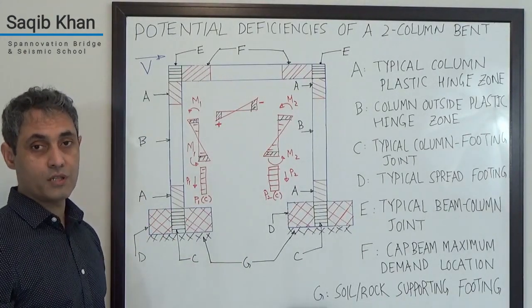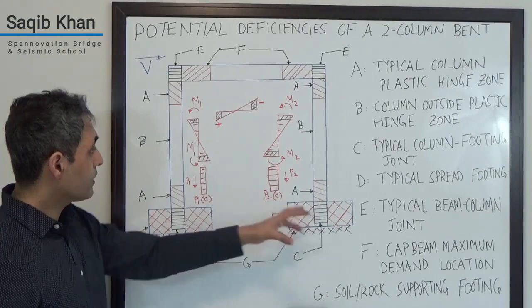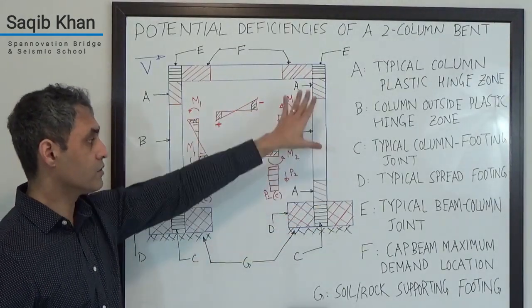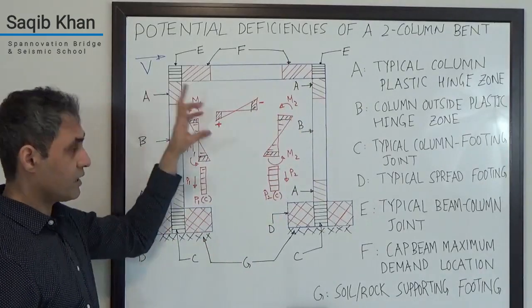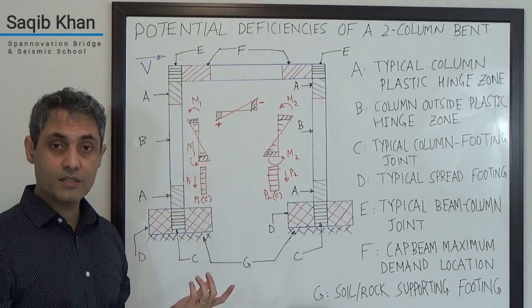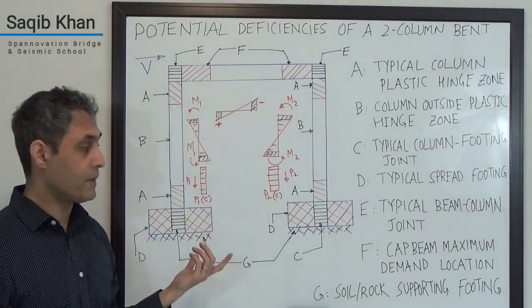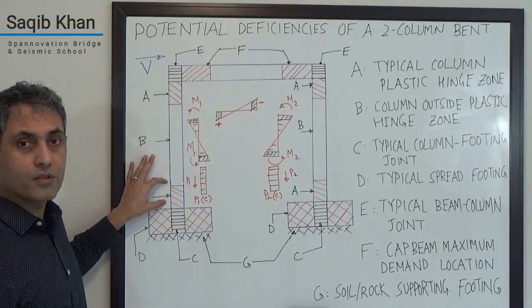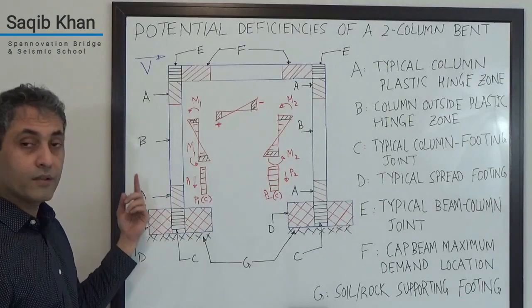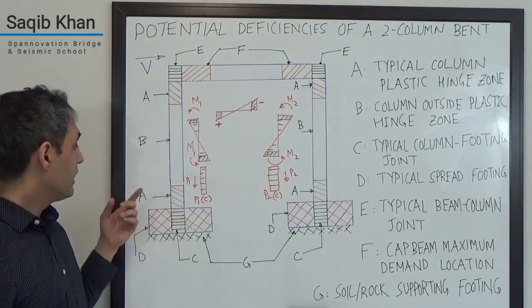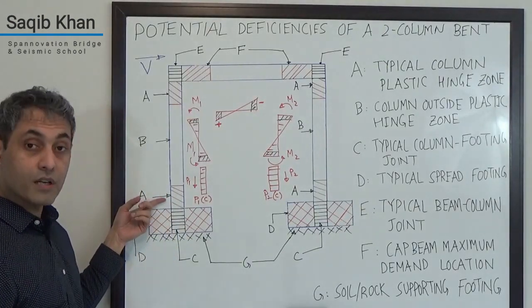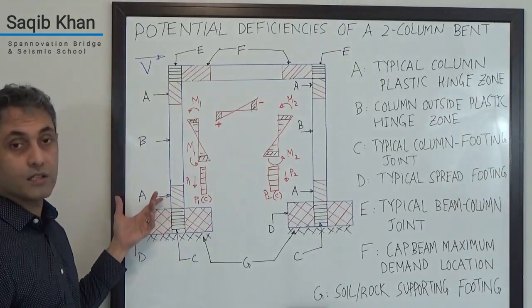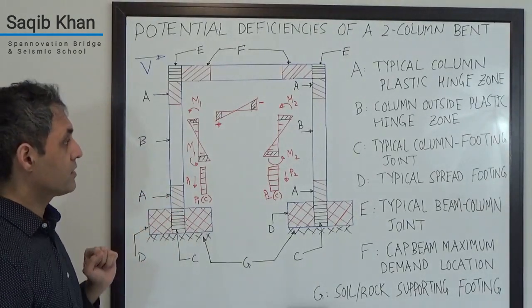Because as you make your system stronger, the overstrength forces are going to be large and all the other areas like the cap beam and the foundations and the column zones outside of the plastic hinge zones that need to be capacity protected will become very difficult to manage. We want to have appropriate amount of longitudinal rebar. We want to have appropriate confinement reinforcement and we also want to have enough shear reinforcement for overstrength shear that can develop as a result of any overstrength in the system.